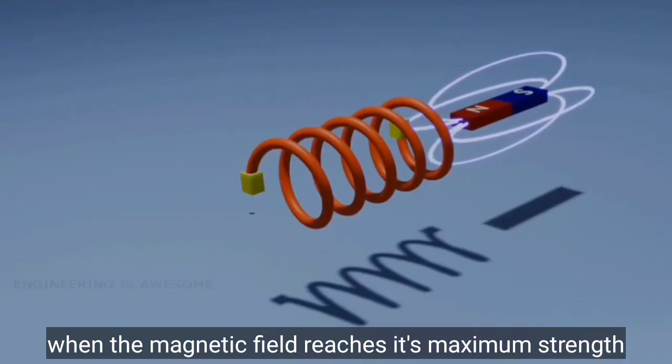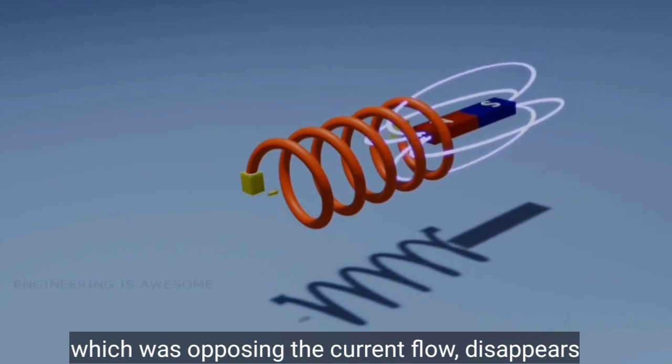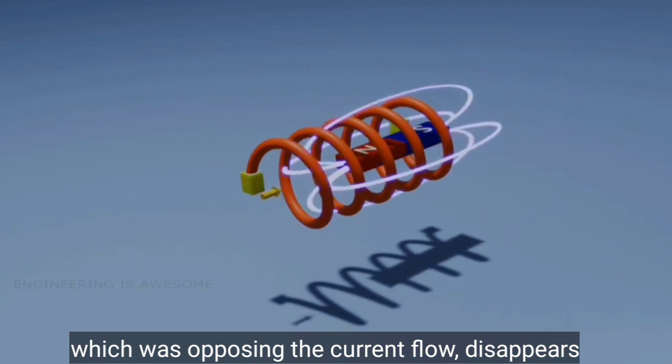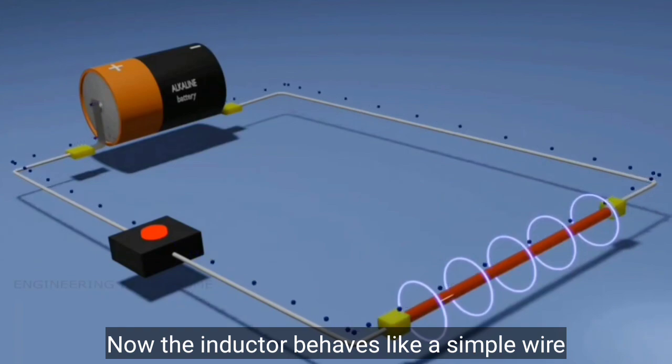When the magnetic field reaches its maximum strength, it can no longer expand. So the back EMF which was opposing the current flow disappears and allows the current to flow through the inductor. Now the inductor behaves like a simple wire.